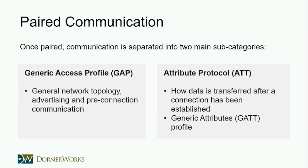The Bluetooth specification separates communication into GAP and GATT. GAP — the Generic Access Profile — defines the connection process: how you advertise, how you connect, and the central and peripheral roles. That has nothing to do with actually transmitting data; it's purely about establishing a connection. Once communication is established, actual data transfer follows the Attribute Protocol (ATT). Bluetooth's Generic Attribute Profile (GATT) is what everything on the market uses to transmit data back and forth.